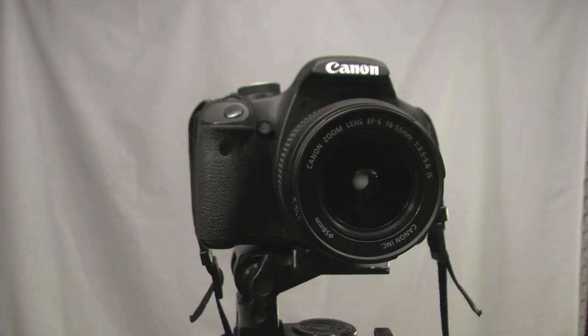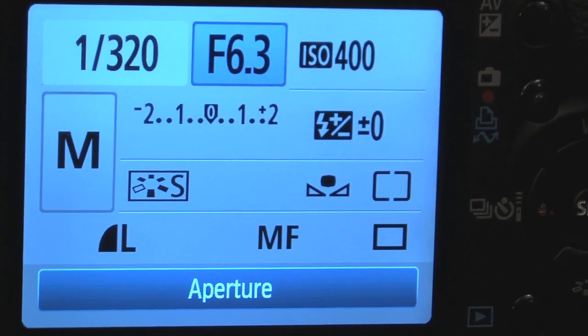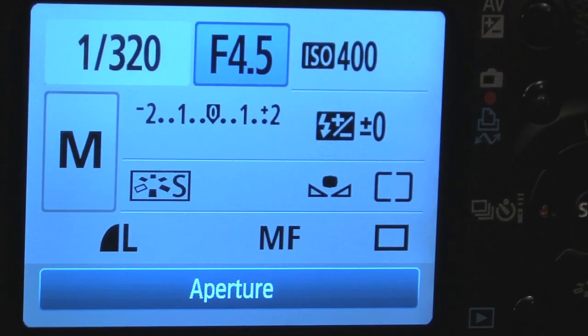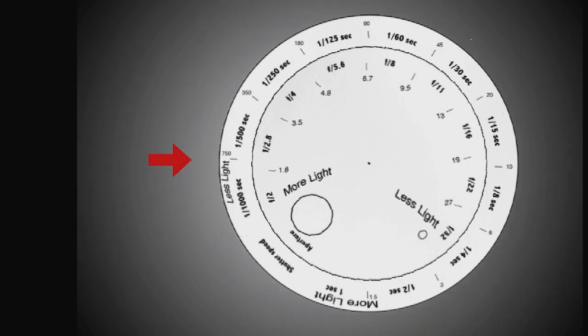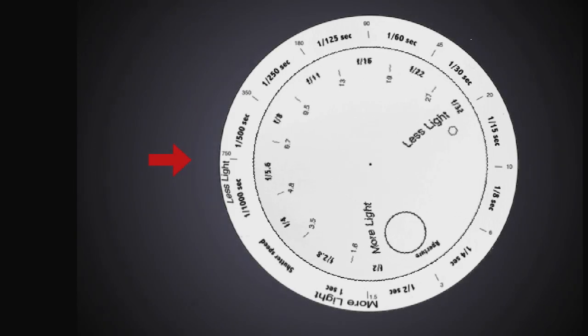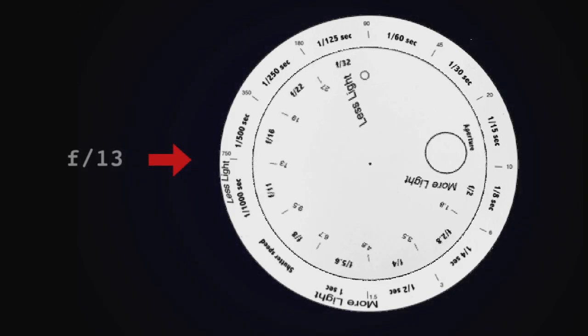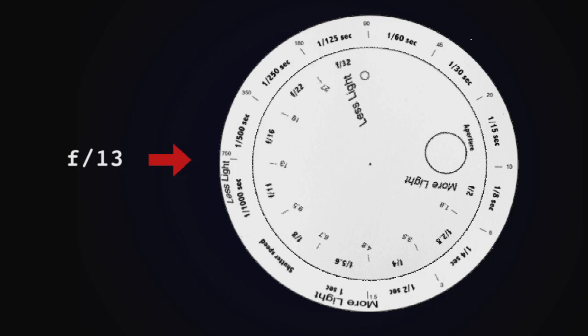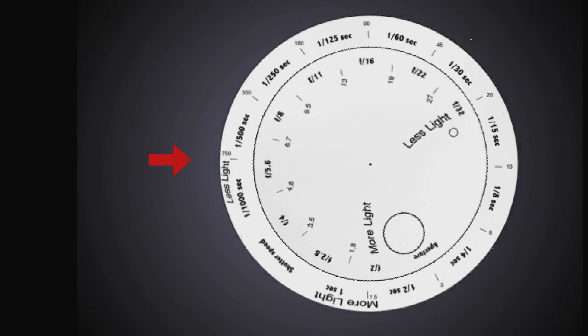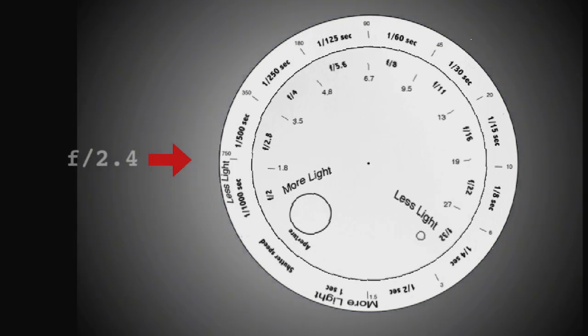First, we'll be adjusting the camera's aperture and ISO. When taking a picture, you're capturing light reflected from your subject. The more light you let in, the brighter the image. The camera's aperture is measured in f-stops. The smaller the aperture, or the higher the f-stop number, the less light is captured by the lens. The larger the aperture, the more light is captured by the lens.